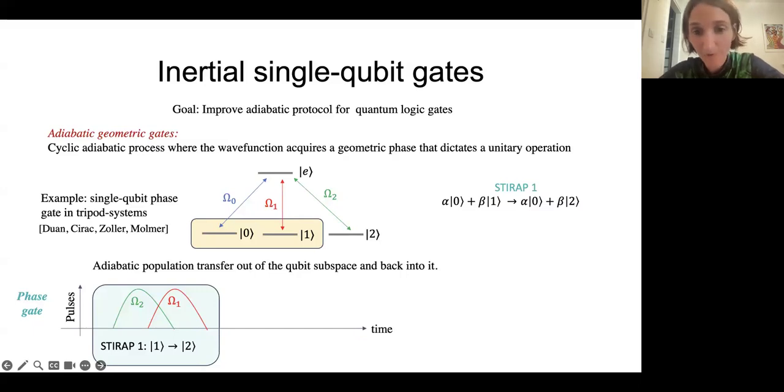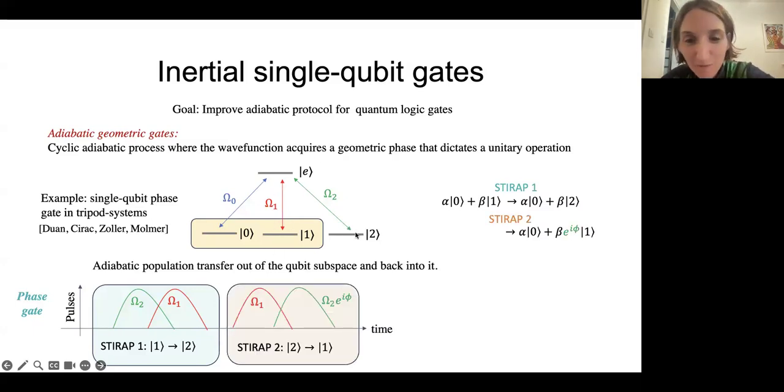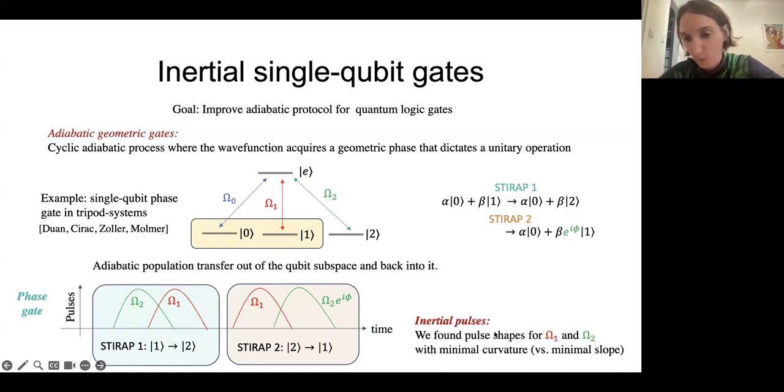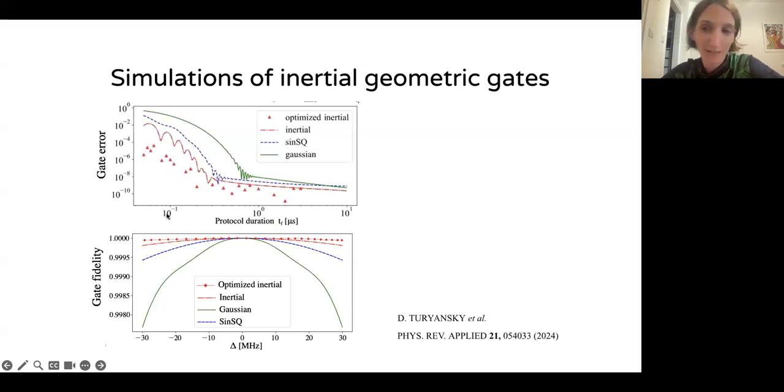Then I'll say a word about how we improved it. The original protocol is this. In order to transfer population out of the qubit state, we actually take the population out of one into two with a STIRAP stage. We apply these pulses omega-2 and omega-1. And then we retrieve population from two to one by applying once again omega-1 and omega-2. But we shift the phase of the second field. And in this way, the qubit state acquires a phase. The standard approach is to apply adiabatic pulses. What we did is we found pulse shapes for omega-1 and omega-2 that are not adiabatic, but they are inertial. And in this way, we improve the performance.